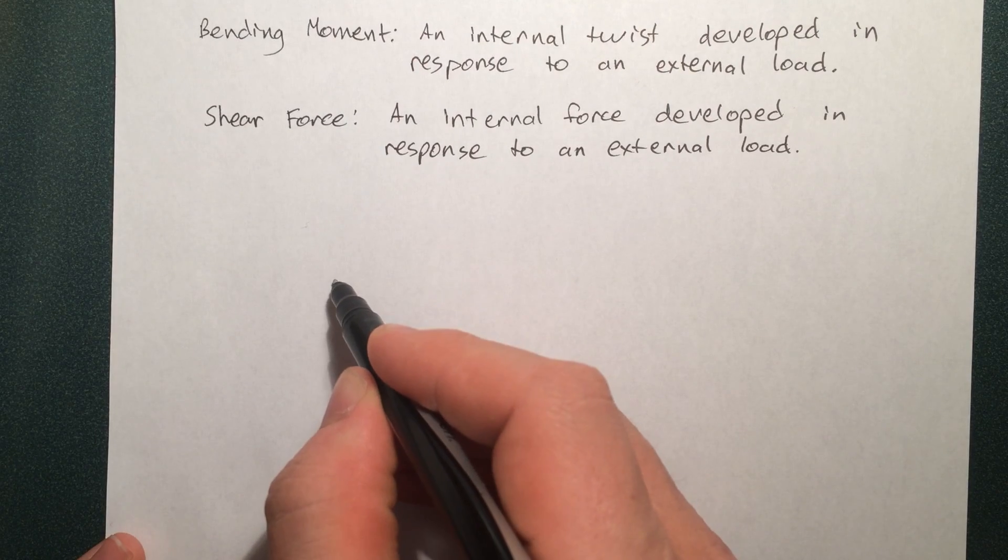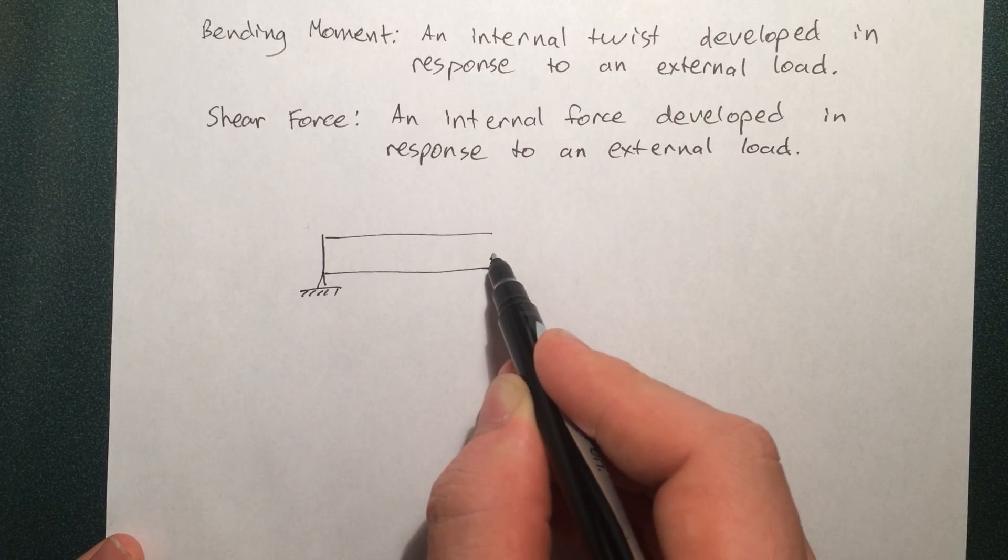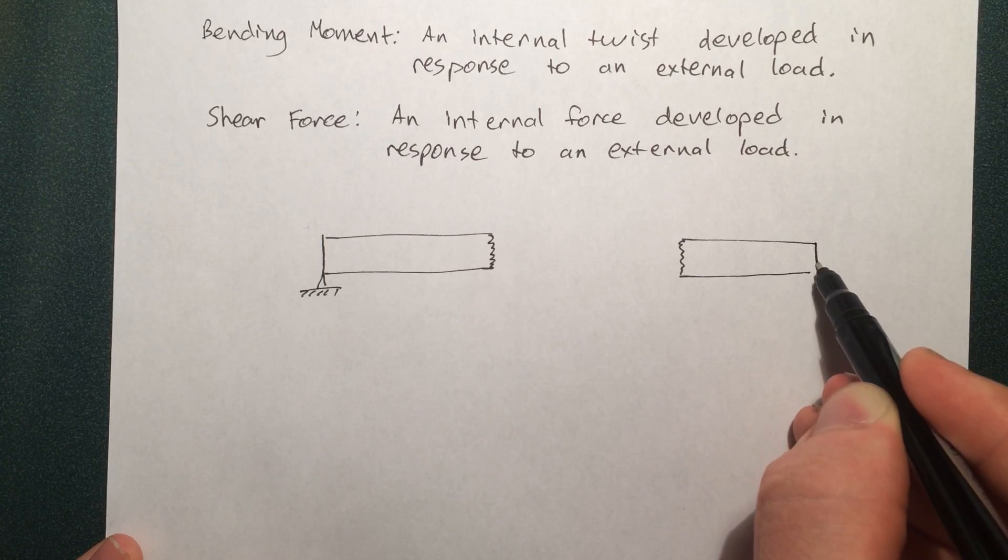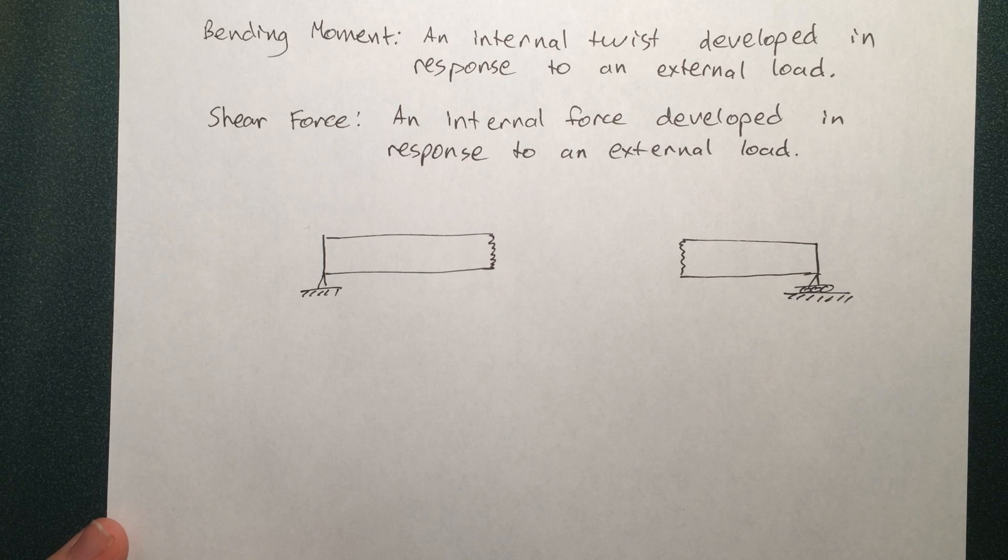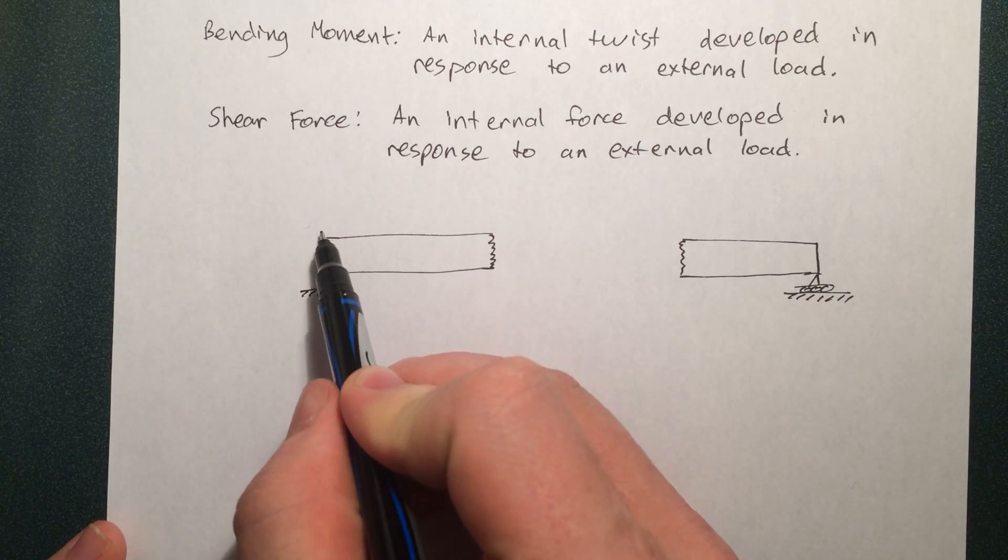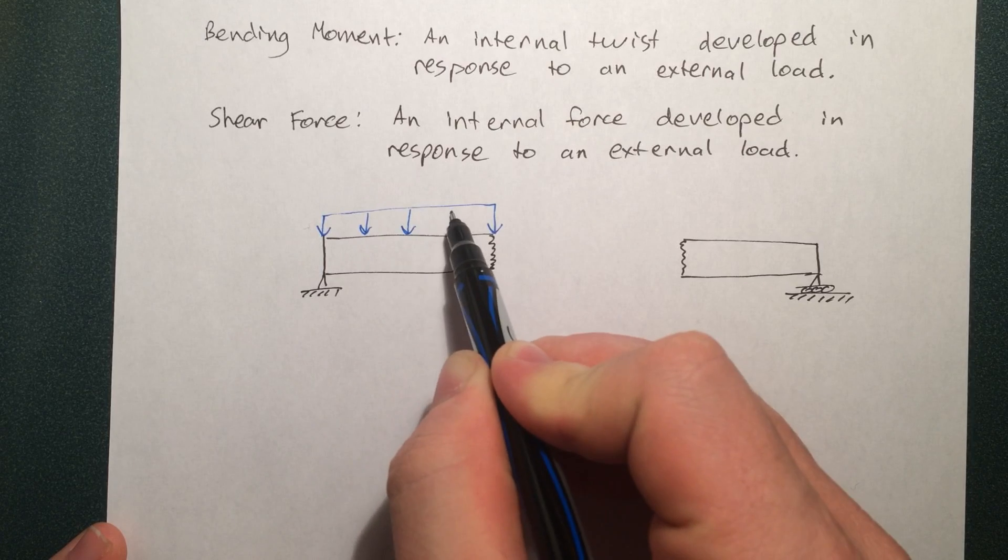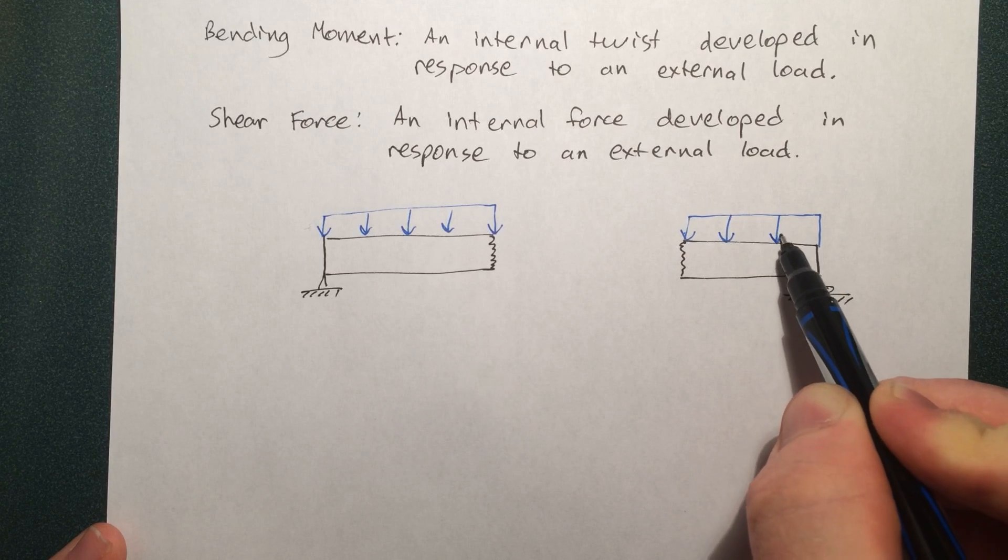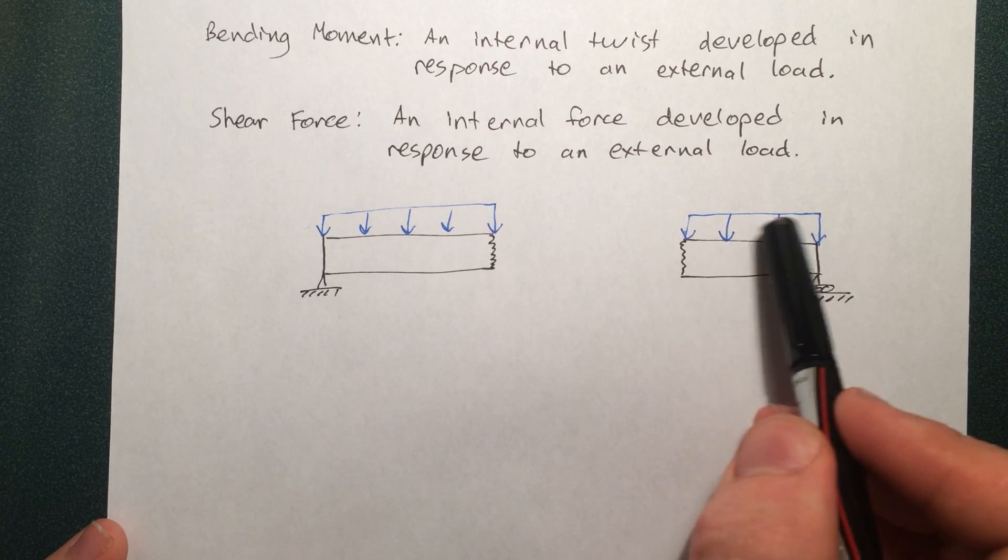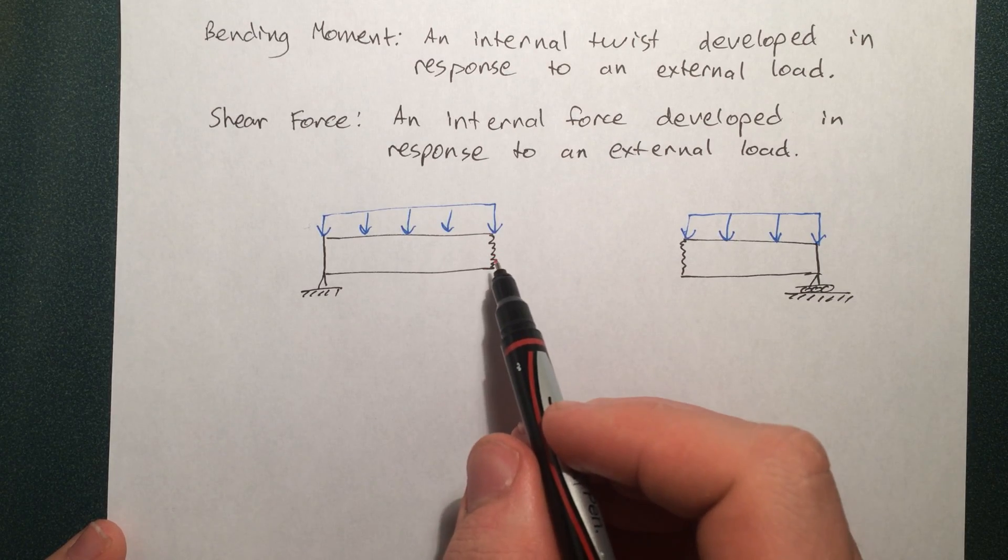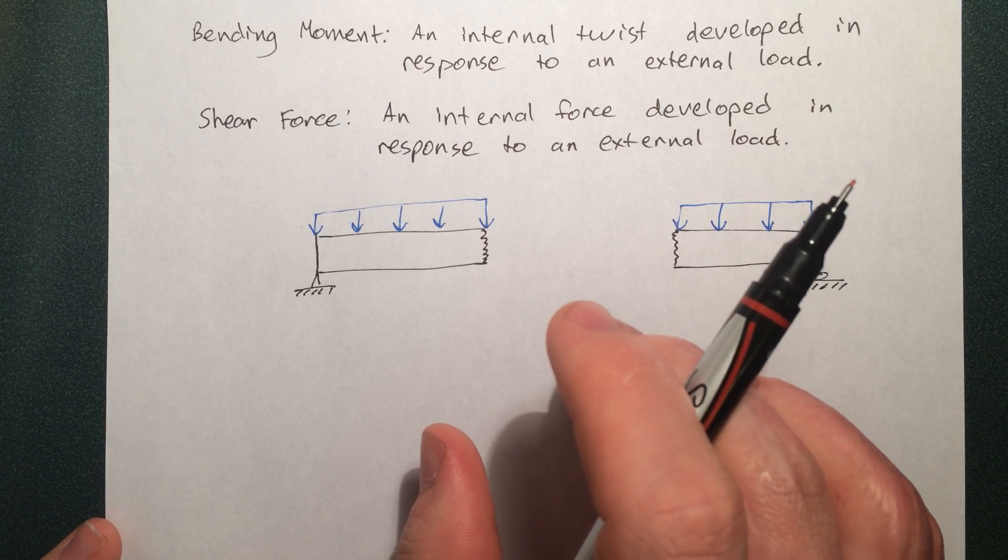So let's take a look at a beam that we've made a cut in the middle and separated. Now let's assume this beam has been loaded beforehand by some sort of load. Let's just make it a constant applied load. Now you can imagine that in response to these external loads, the internal bit is going to have to respond to make sure that it stays in equilibrium.